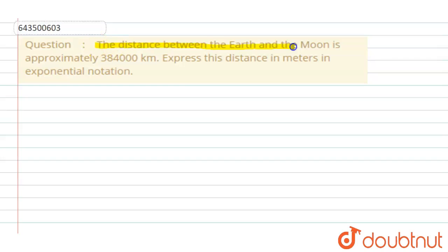the distance between the Earth and the Moon is approximately 384000 kilometers. Express this distance in meters in exponential notation. Clear. So it is given that the distance between Earth and Moon is 384000 kilometers, and we have to express this distance in meters in exponential notation.